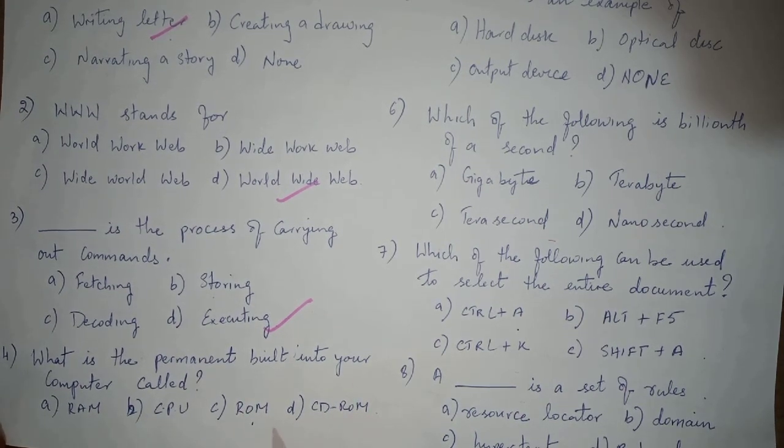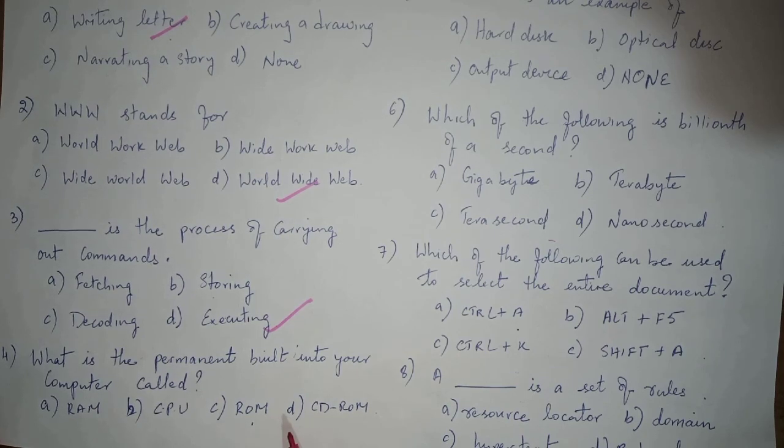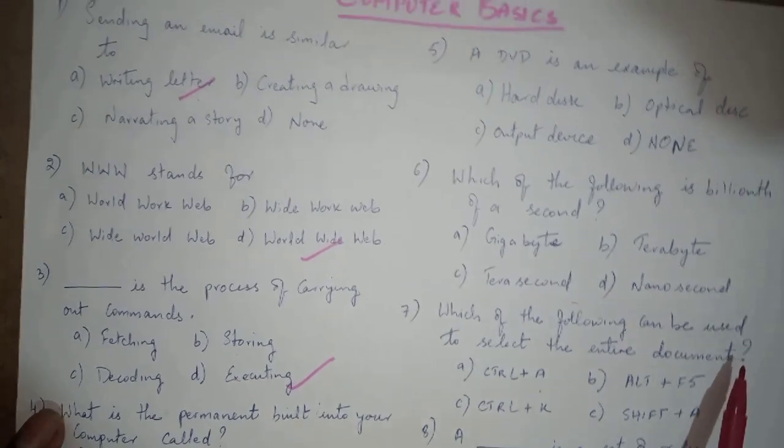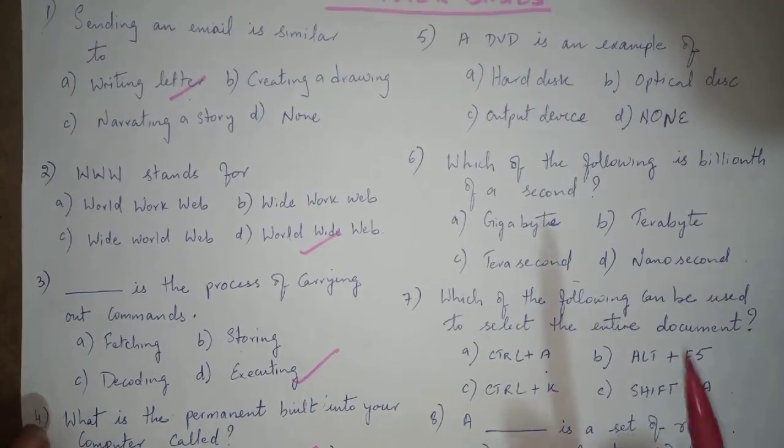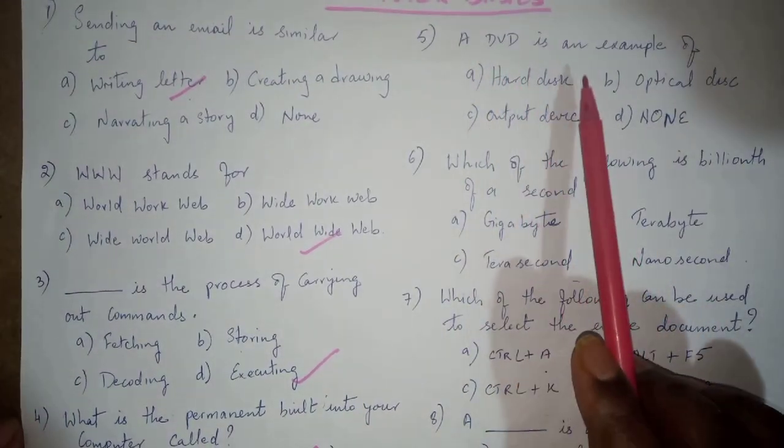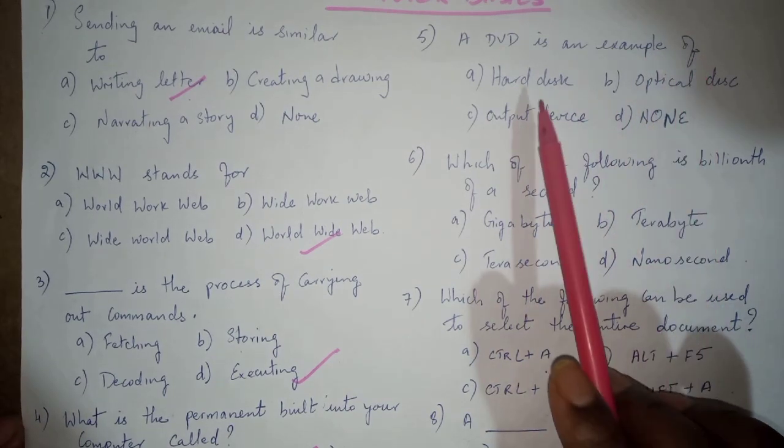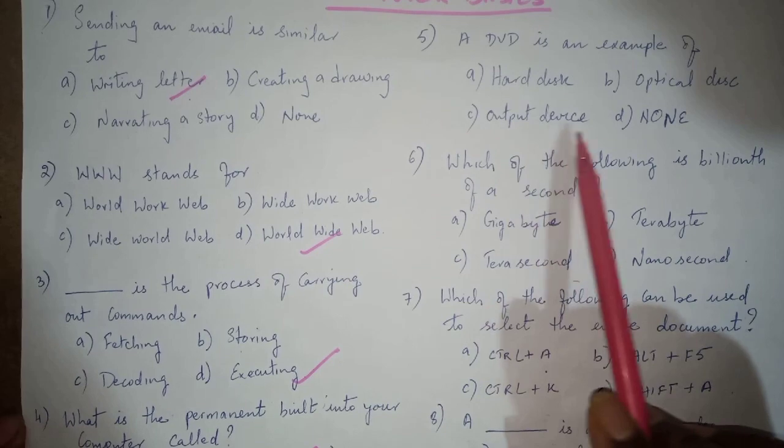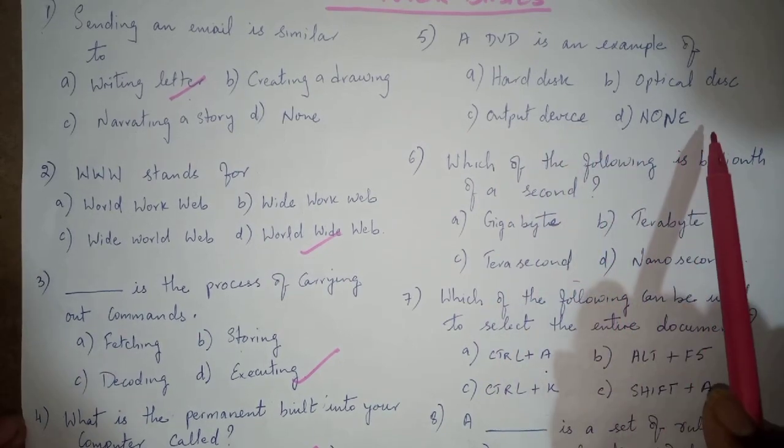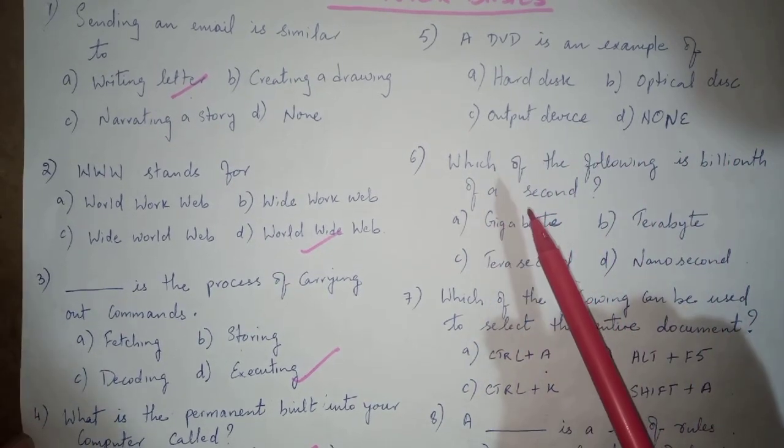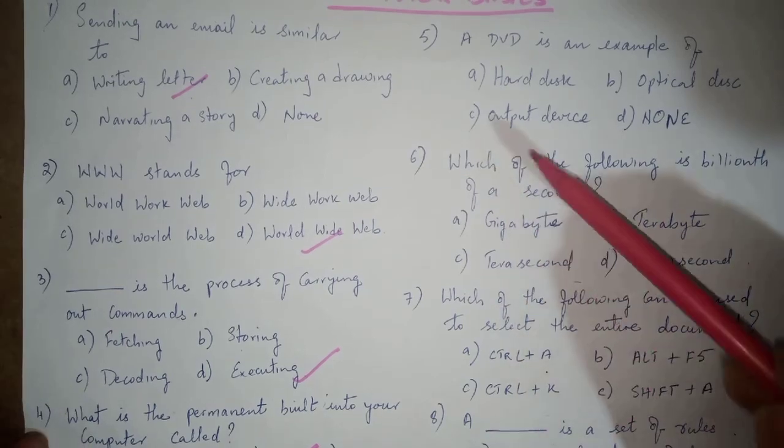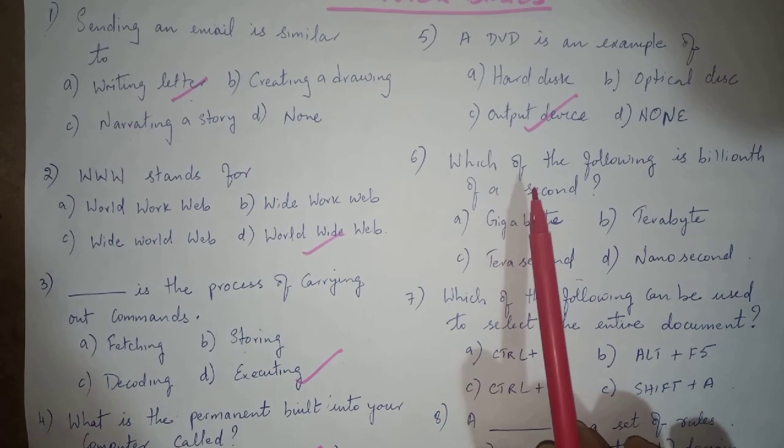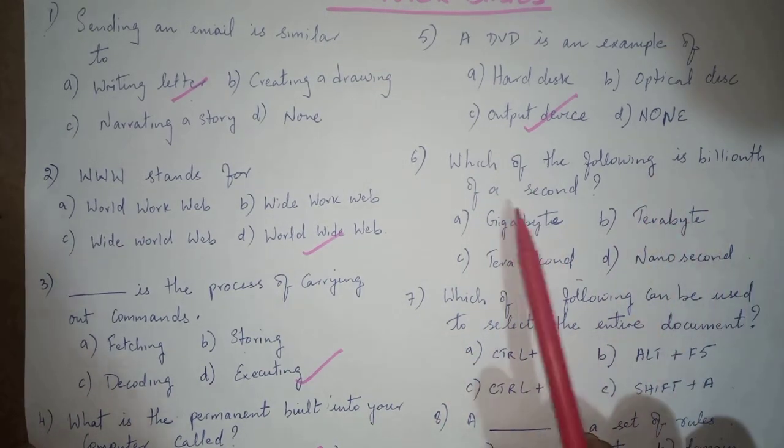Next question is: a DVD is an example of hard disk, optical disk, output device, or none of the above. And the answer is it is an example of output device.